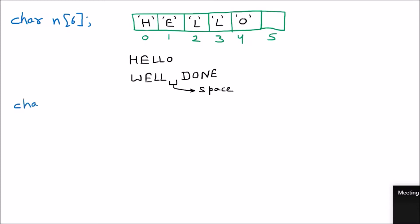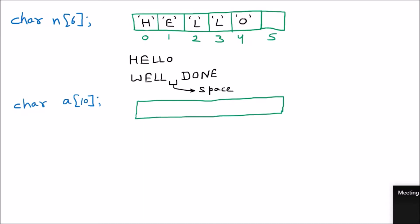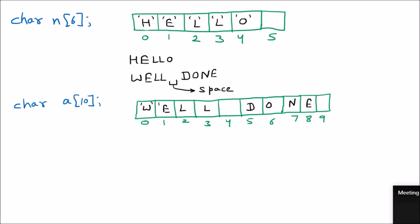Let's suppose char a[10] — I have declared a character array 'a' that can take 10 values. The memory allocation starts from 0, 1, 2, 3, 4, 5, 6, 7, 8, and 9 — that is 10 memory locations of character type, indexed 0 to 9. If I want to store 'well done' here, it will be: 'w', 'e', 'l', 'l', then space, then 'd', 'o', 'n', 'e' — everything in single quotes.